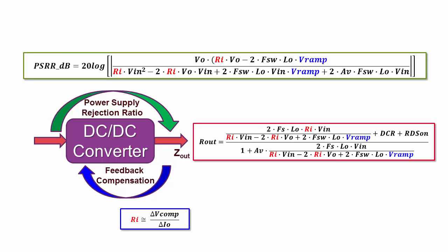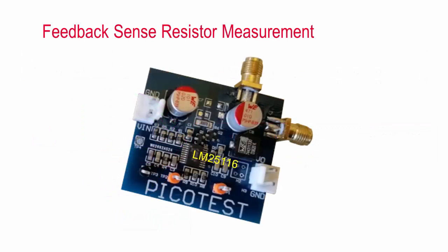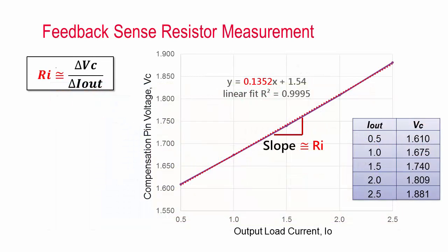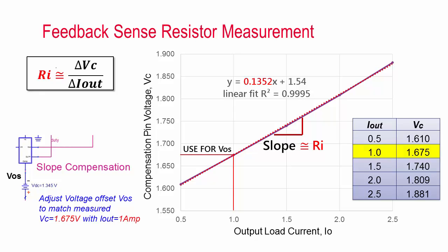And if this looks scary, don't panic — you won't need to use these equations, but they're here just in case you want them. First, I'll extract the current sense resistor RI. This is often impacted by the printed circuit board, so I'll use an LM25116 characterization board for our example. The output voltage compensation of the feedback amplifier is measured for several values of output load current. The slope of the data is the value of RI — 135 milliohms in the case of my printed circuit board design. For comparison, the Texas Instruments evaluation board for this converter measures 115 milliohms. Also note that there is an offset voltage term, VOS, which needs to be adjusted to match the measured data.